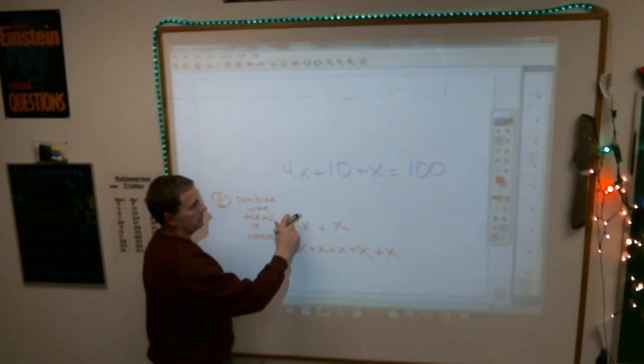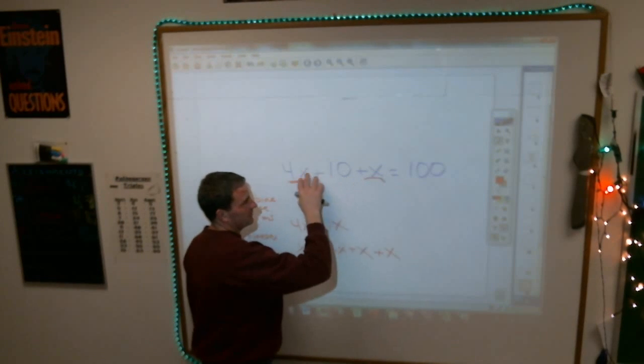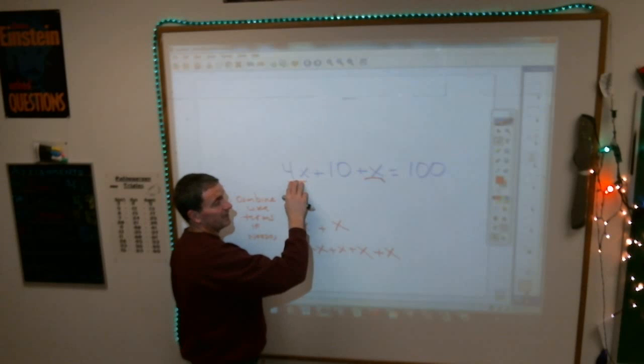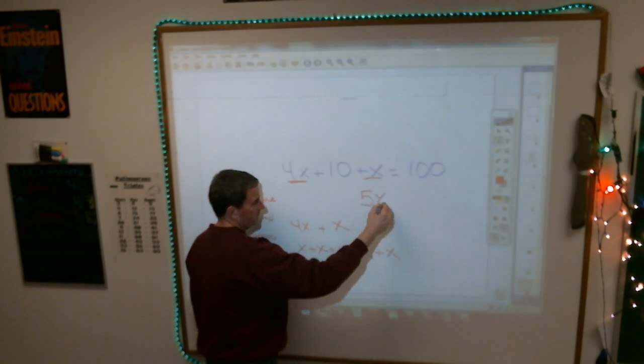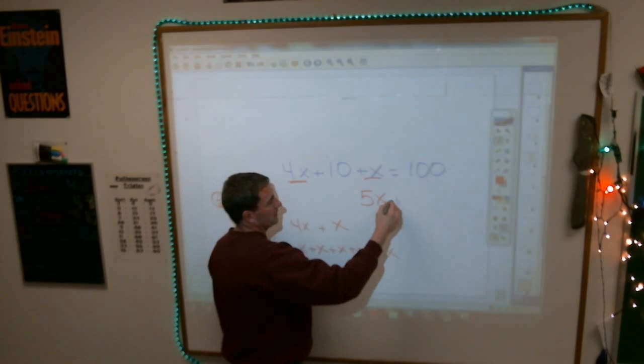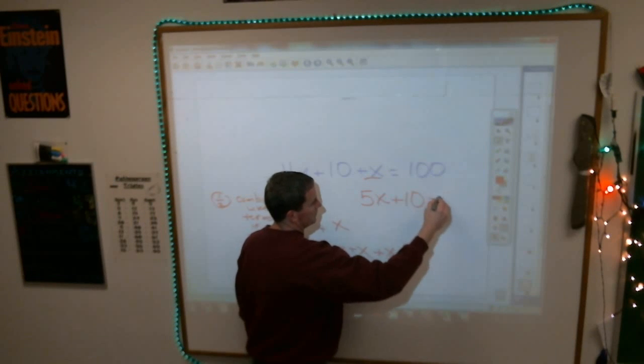So, like we did here, you can put the x's together. I can't put the 10's together because it's not like, but 4x and an x is like, so it becomes 5x, we just discovered down here, plus 10 equals 100.